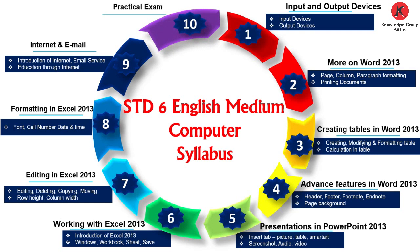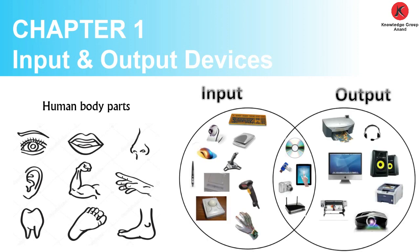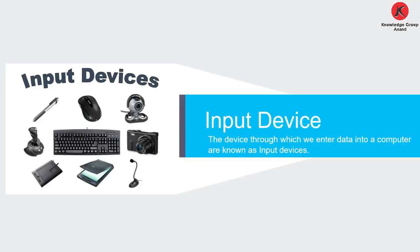Let's start Chapter 1: Input and Output Devices. As we know, the human body has different parts like eyes, hands, legs, ears, and nose, and they have different functionality — some parts work as input and some as output. Similarly, a computer has different parts, and some of them are input devices and some are output devices.